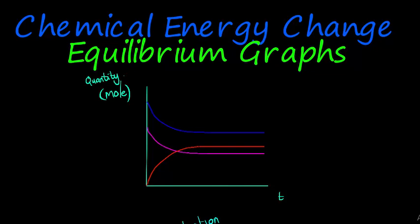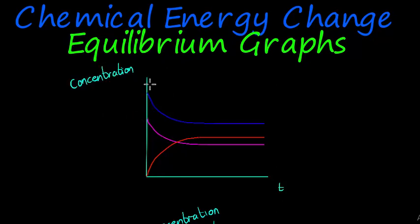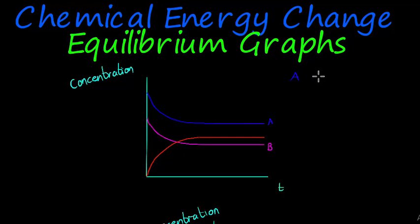Here is an example of an equilibrium graph — it's concentration versus time. In the graph I have reactant A and reactant B, and I know they are reactants because they don't start on zero. Then I have C, and I know C is a product because C started on nothing — there was nothing for it, so A and B were added together and produced C.